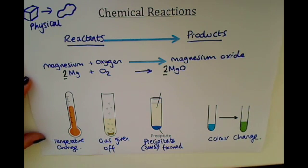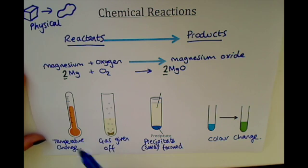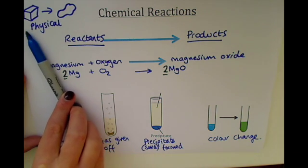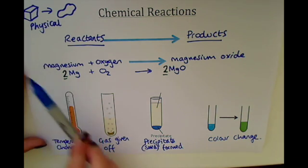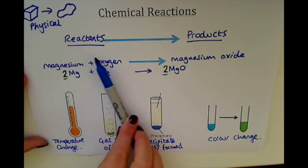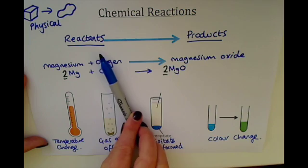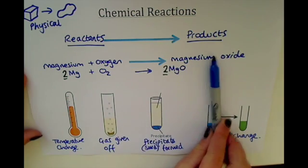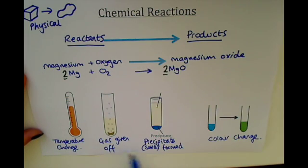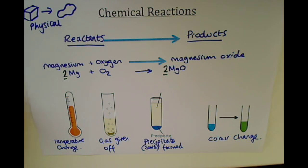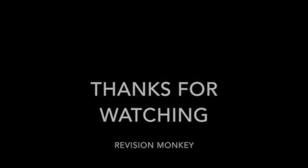In summary, in a chemical reaction new substances are formed, which is totally different from a physical change. Reactants are on the left-hand side of the arrow and they become products. And there are at least four different ways which you can tell that a chemical reaction has happened.